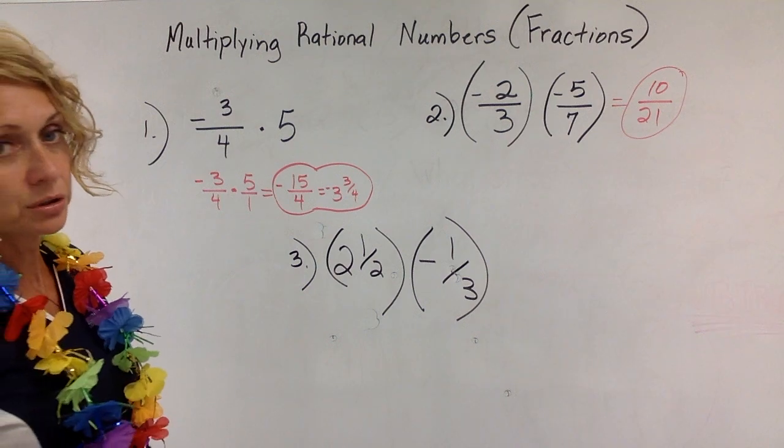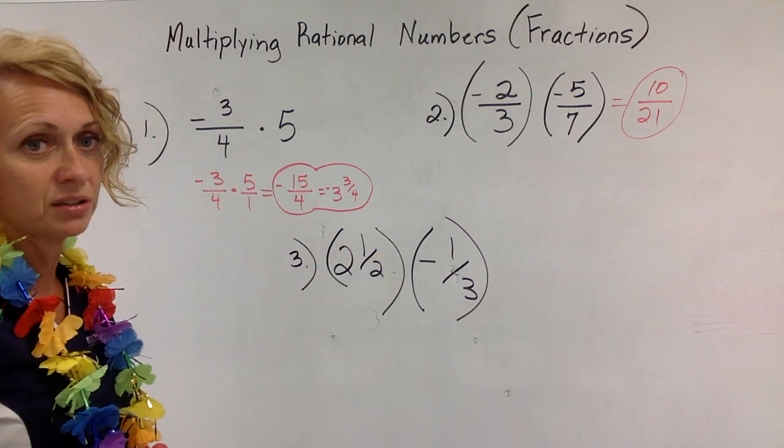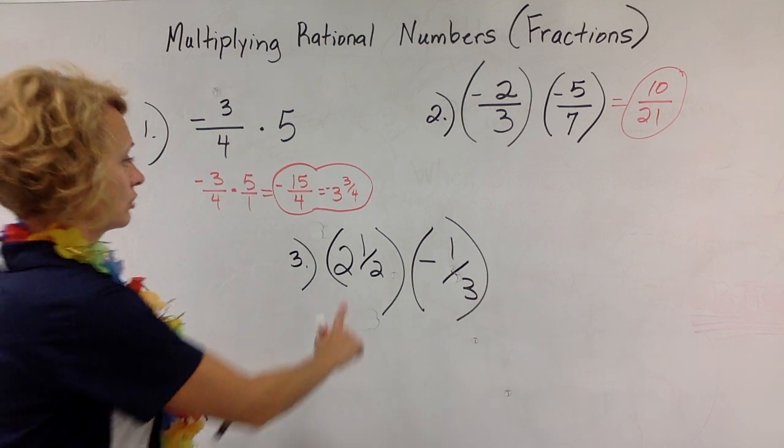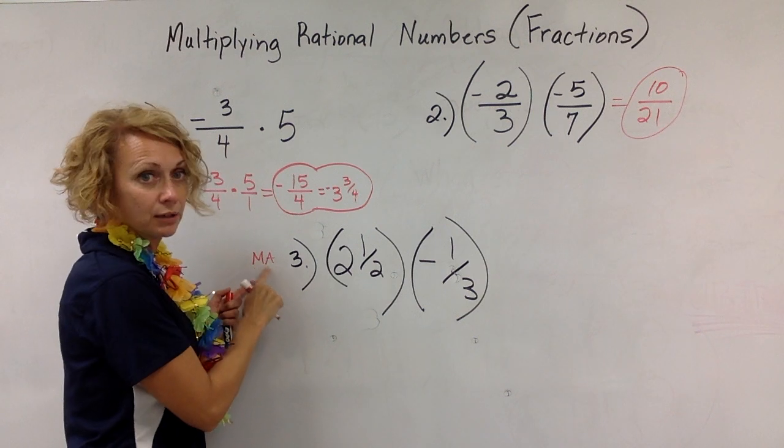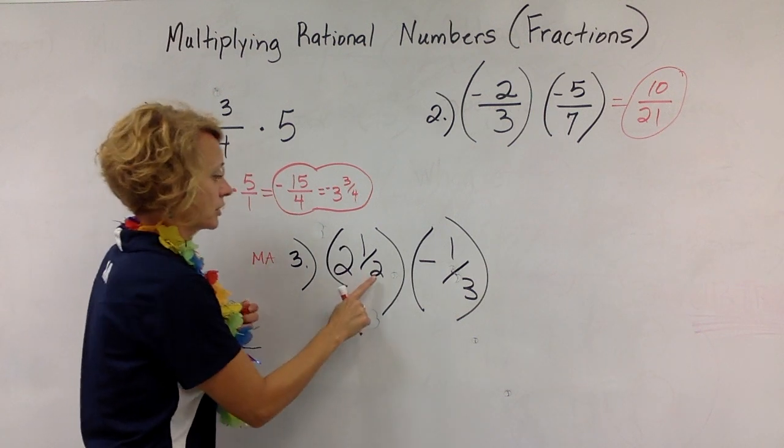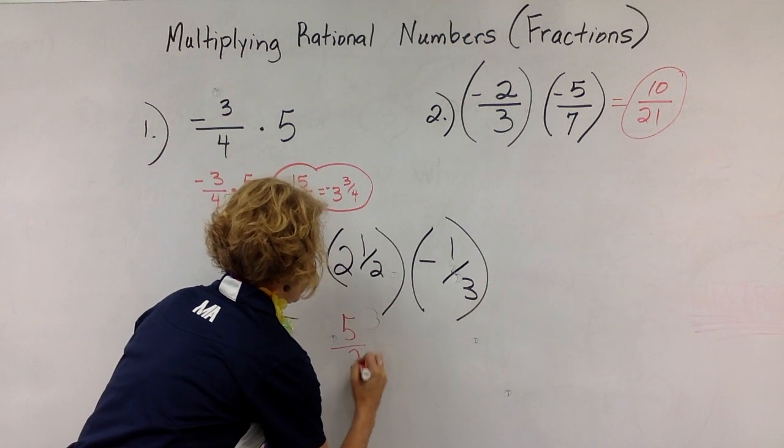My suggestion is take your mixed number and let's change that to an improper fraction. Remember that you do that by multiplying and adding. Remember M A, Mount Airy, multiply, add. So here we go. 2 times 2 is 4 plus 1 is 5. So I have 5 over 2.